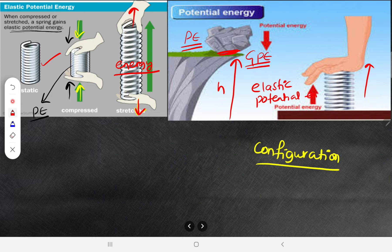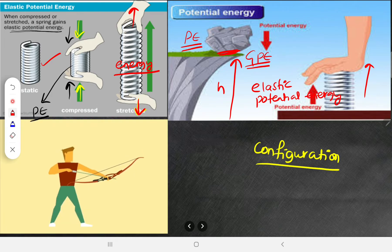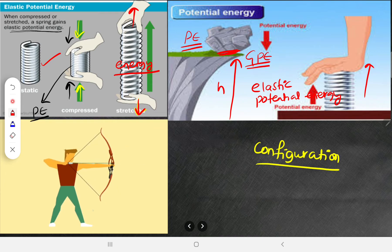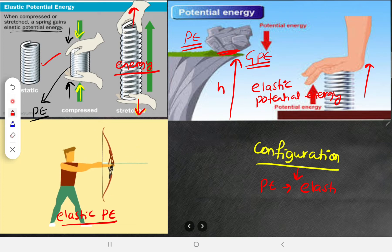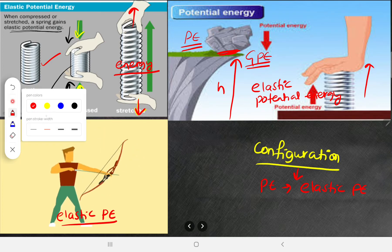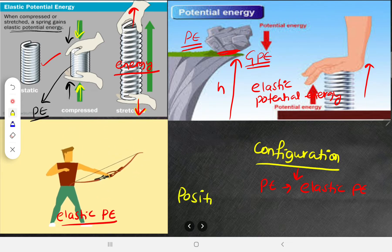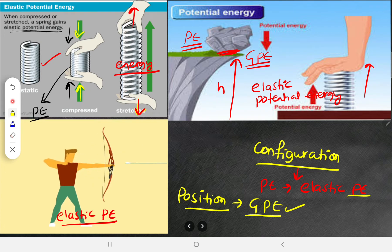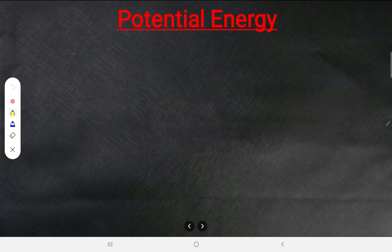When a man stretches a bowstring, that string gains elastic potential energy due to its configuration. So: if a body gets energy due to its configuration, that is elastic potential energy. If a body gets energy due to its position, that is called gravitational potential energy.